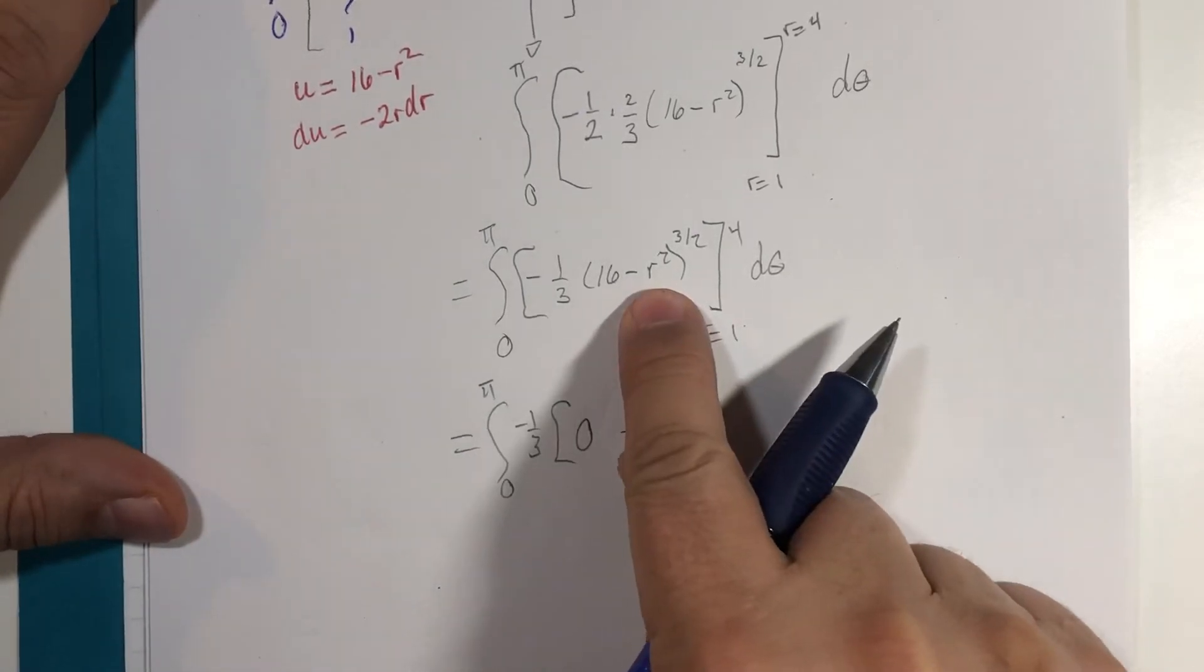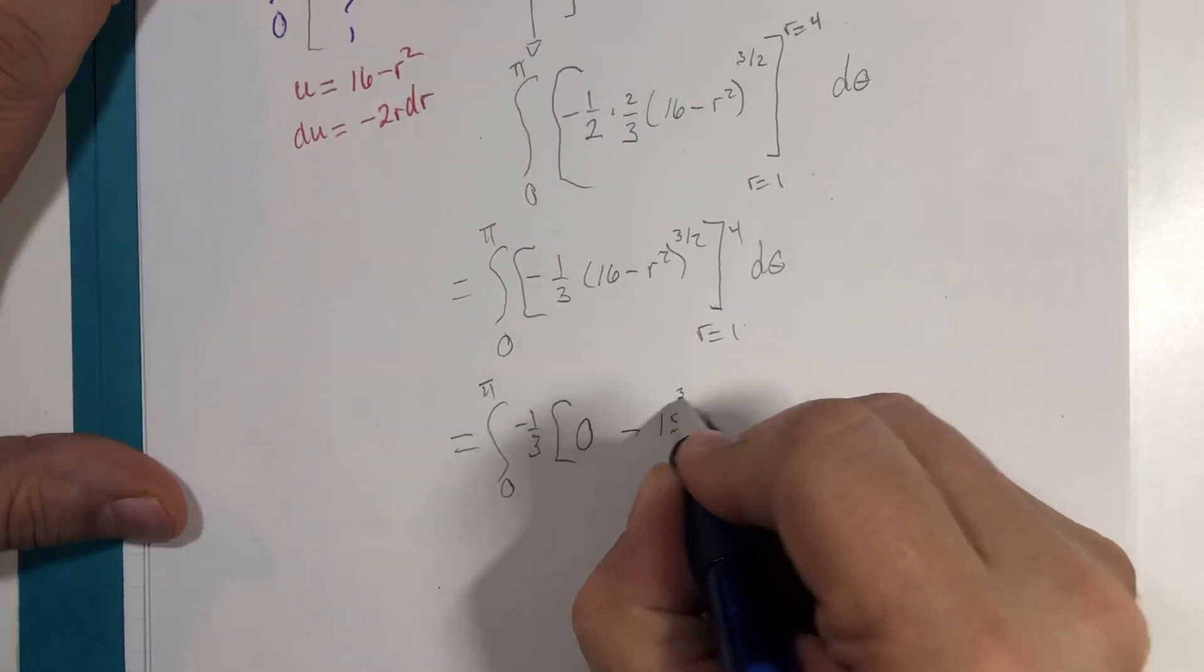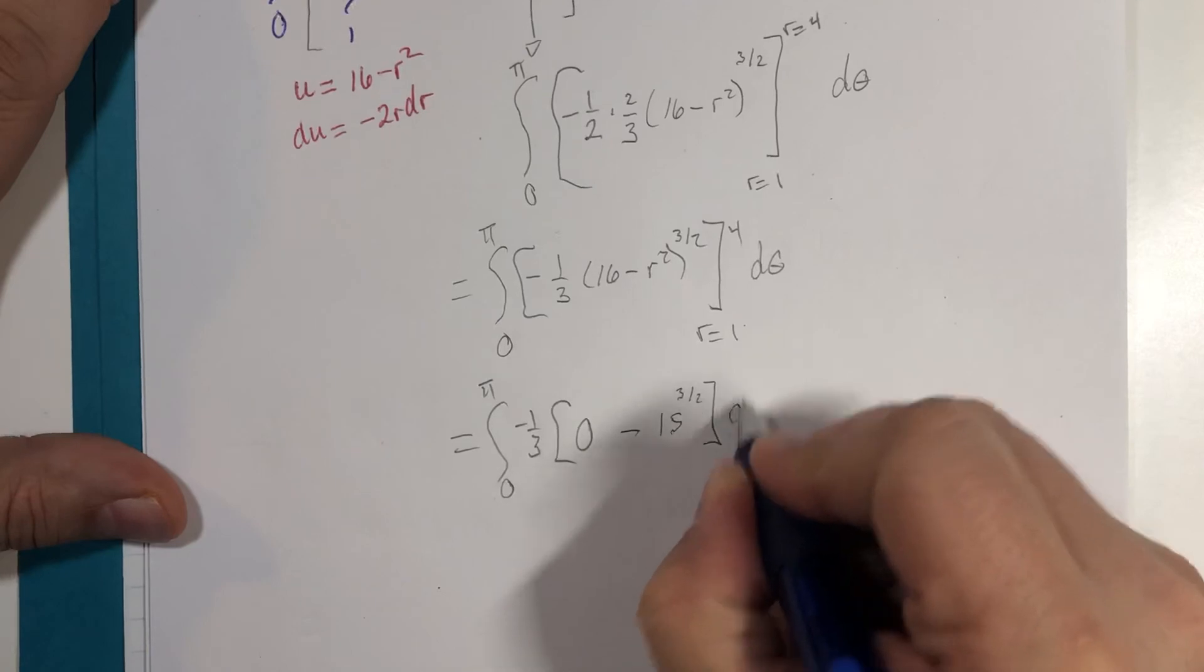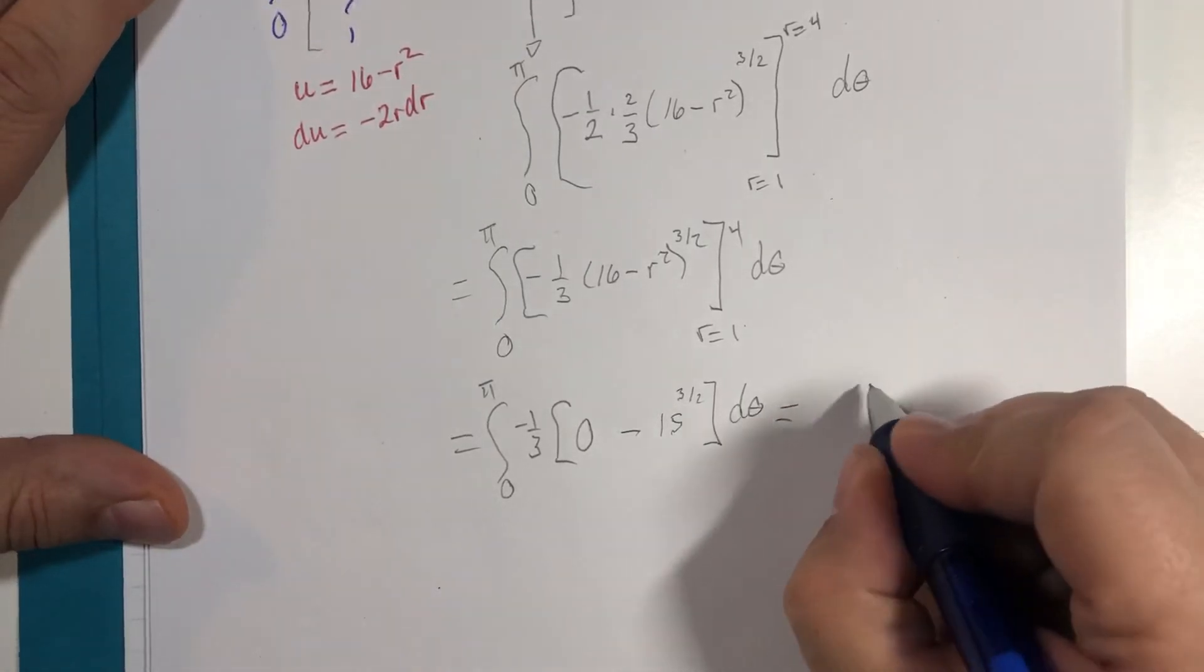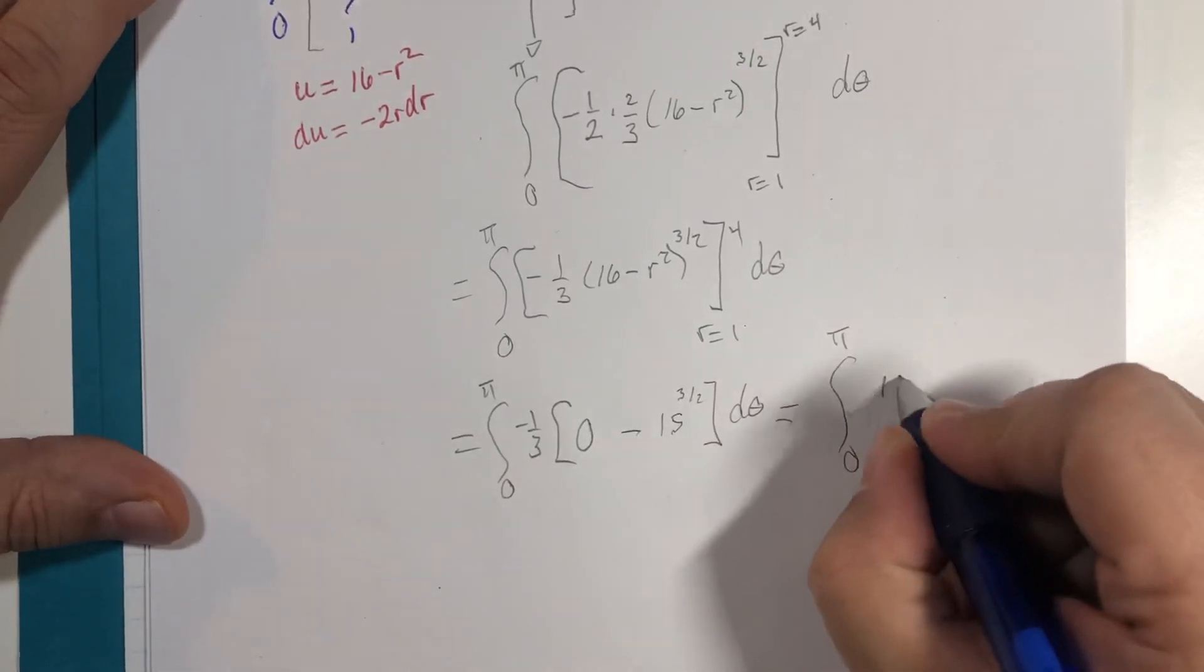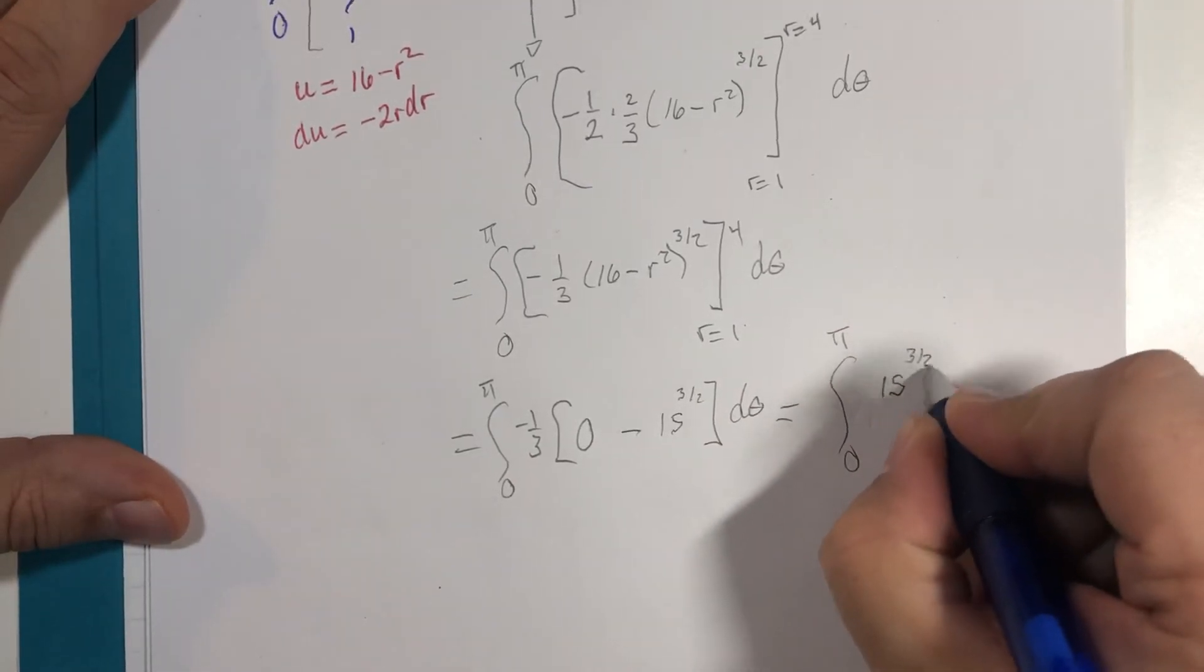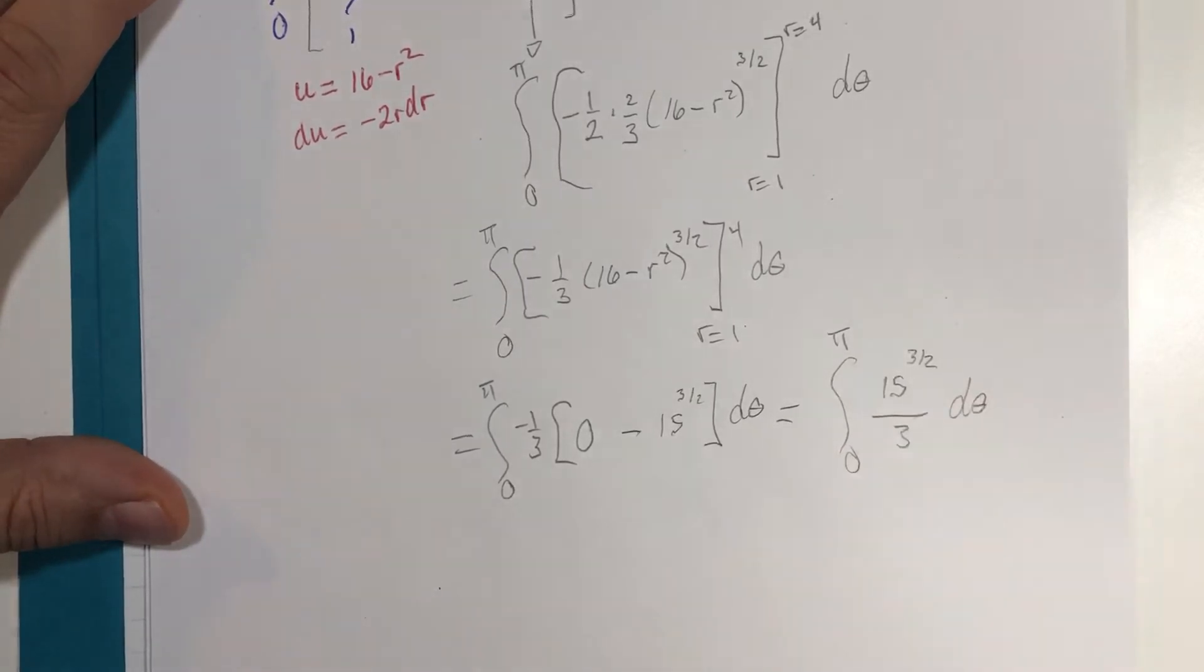Minus 15 to the three halves power with respect to theta. This becomes zero to pi, 15 to the three halves power over 3. Integrate with respect to theta.